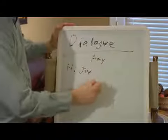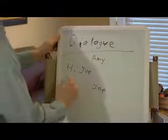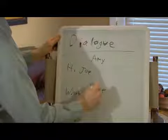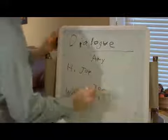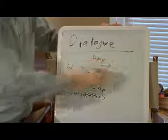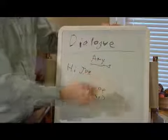and then Joe, "What's up Amy?" So we just have the person's name, not underlined, and then the line.